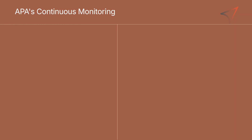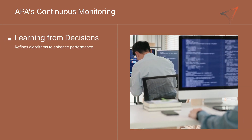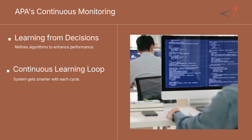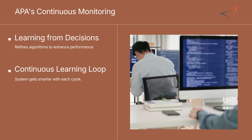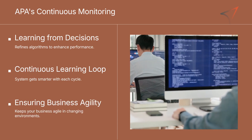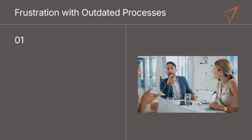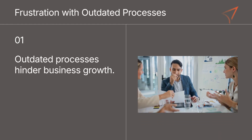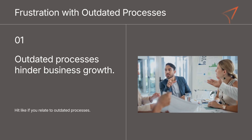Finally, APA continuously monitors the outcomes of its actions. It learns from every decision, refining its algorithms to improve performance over time. This continuous learning loop means the system gets smarter and more efficient with every cycle, ensuring your business stays agile in a constantly changing environment. Here's a quick question for you: how many of you have experienced the frustration of outdated processes that just don't keep up with your business needs? Hit that like button if you've been there, and let's see how many can relate.